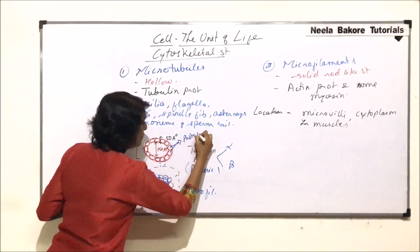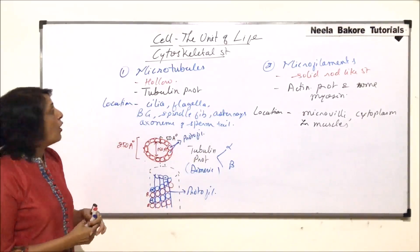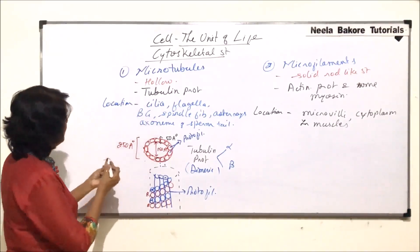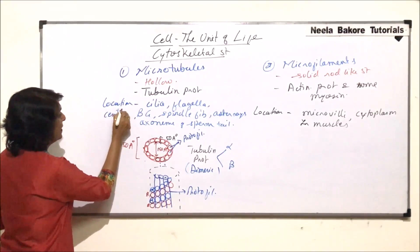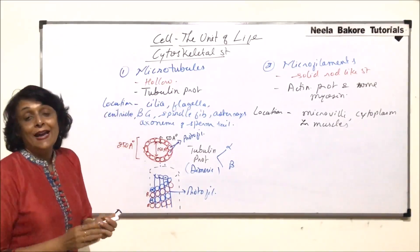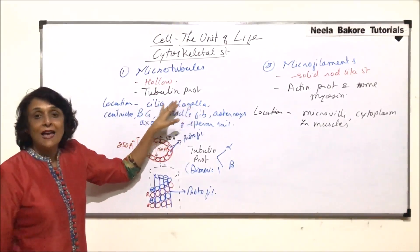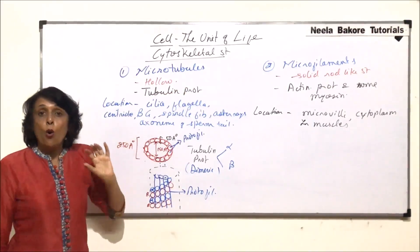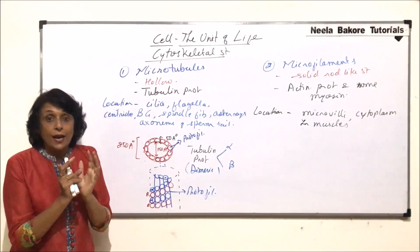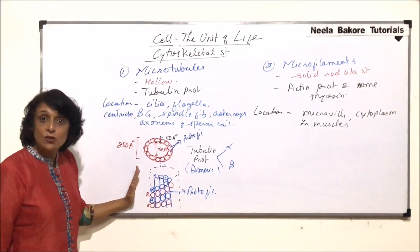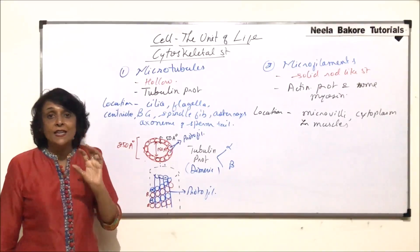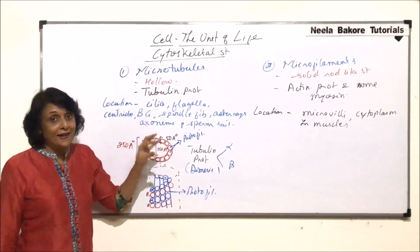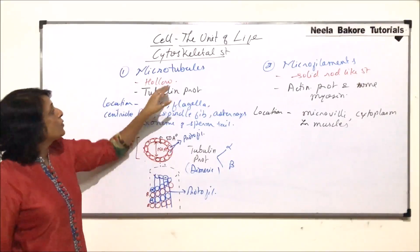These protofilaments form the wall of the microtubule. Microtubules are responsible for the formation of cilia, flagella, centrioles, basal granules, and spindle fibers. All these structures have a distinct shape and perform functions — this structure is responsible for giving cilia, flagella, centrioles, and basal granules their shape and strength, which is why we call them cytoskeletal structures.